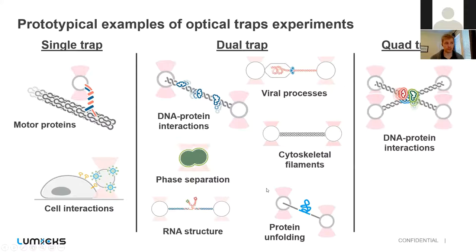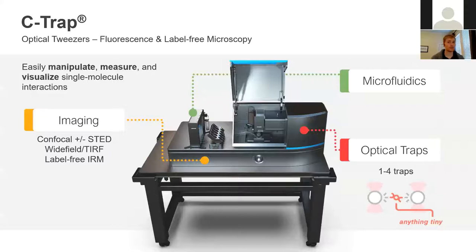And finally, our system can have up to four traps, which just enable you to look at more complex systems. So you can create multiple DNA tethers and study if they're cross-linking proteins. Or you could even create multiple cytoskeletal filaments and look at cross-linking in that situation or how those two fibers can interact. So that is the overview of the C-TRAP technology.